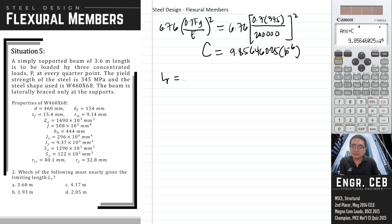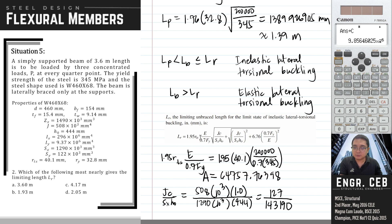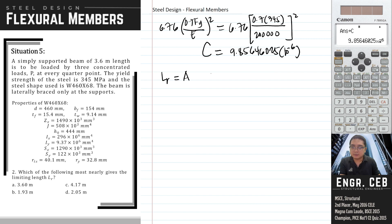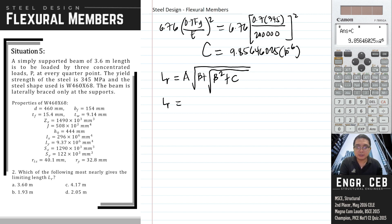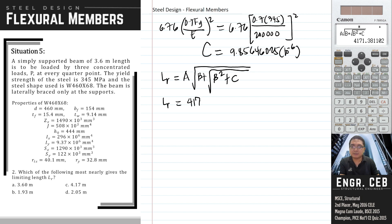We can now compute Lr. Based on the formula, the first part stored as A, Jc/(Sx·Ho) stored as B, and the last expression stored as C. So: Lr = A · √(B + √(B² + C)). Lr equals 4,171.38 millimeters, which is 4.17 meters. The answer is letter C.